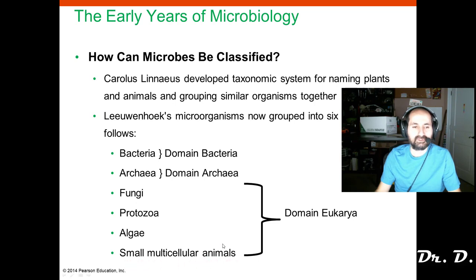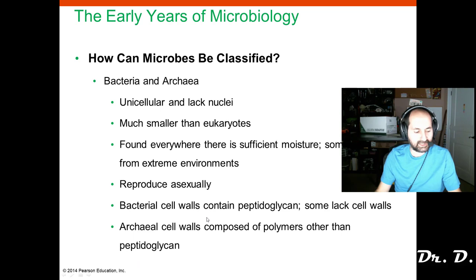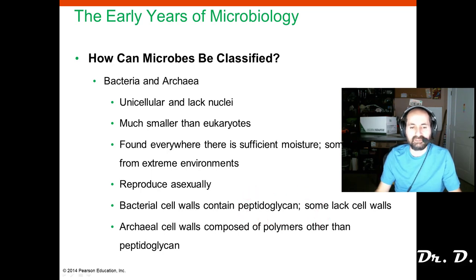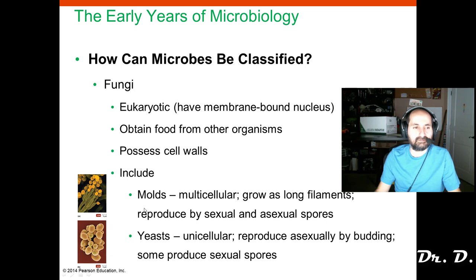Know the difference between prokaryotes and eukaryotes. Remember that bacteria have cell walls of peptidoglycan, archaea do not have cell walls of peptidoglycan, and neither do eukarya. So what you can say is peptidoglycan is unique to bacteria.